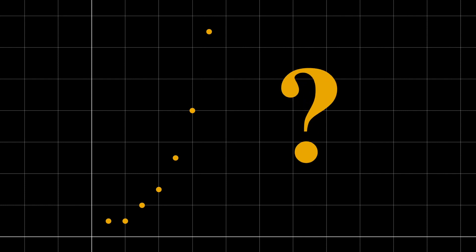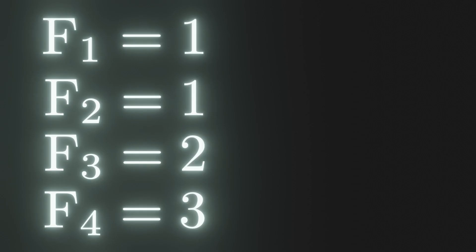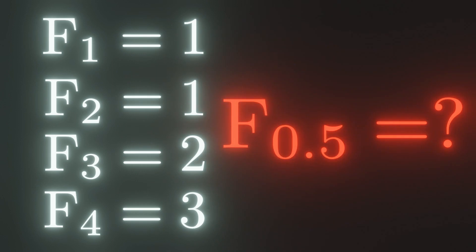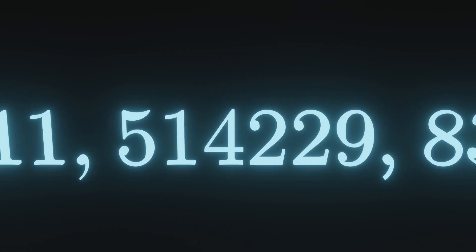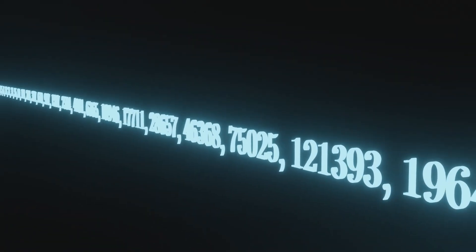But what are the values in between? We can't find out what those numbers should be, because our sequence is only defined for integers. If we want to find a term, we have to calculate all the terms that came before it.